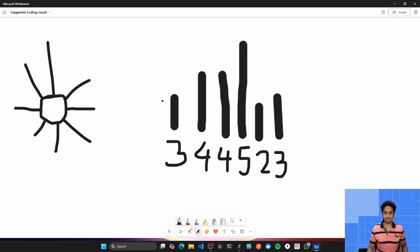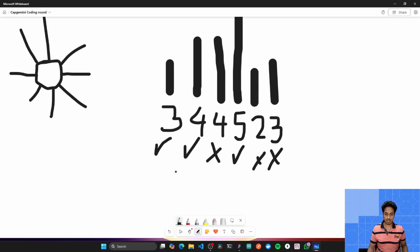3 doesn't have any buildings in front of it, so it can definitely see the sunset. 4 has 3 in front of it, but since it's taller than 3, it can see the sunset as well. Now this 4 is at the same level as the previous 4, that's why it won't be able to see the sunset. This 5 is taller than 4, that's why it will be able to see the sunset. And finally, this 2 and 3 is smaller than the buildings before it, this 4 as well as this 5, that's why they won't be able to see the sunset. So the output, the correct output you should give over here is the number 3, that is the number of buildings which will be able to see the sunset.